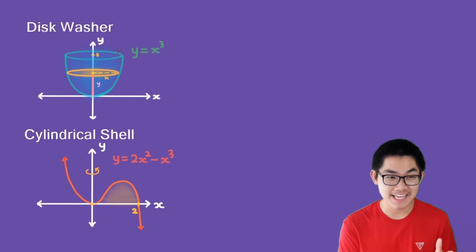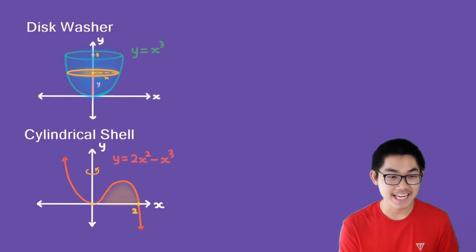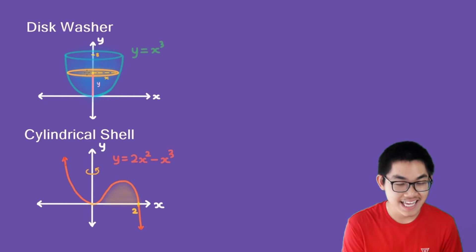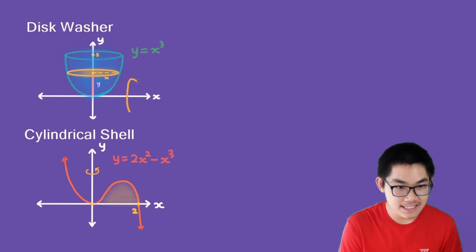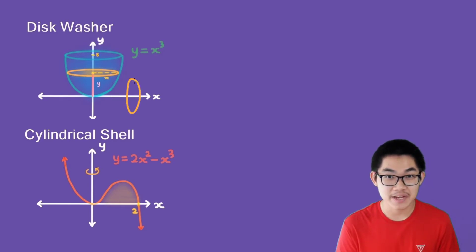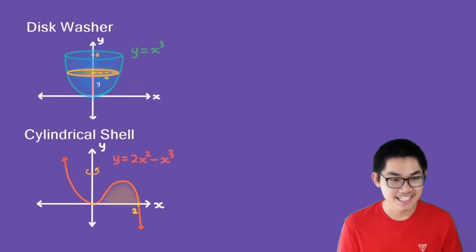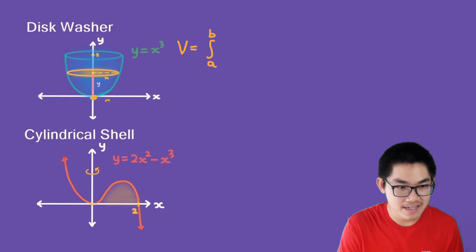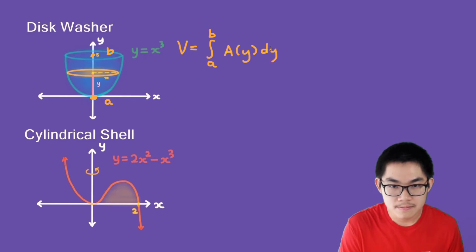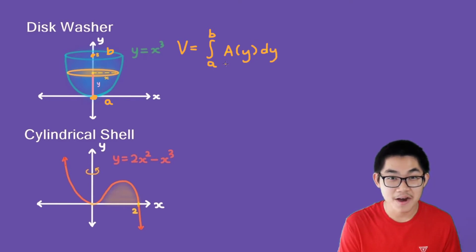If the object looks like half of a cucumber, you have to use the disk/washer method. This method says that if the cross section is on the y-axis, then you integrate with respect to y. If it's on the x-axis, you integrate with respect to x. Since it's on the y-axis, the volume formula is the integral from a to b of A(y) dy, where A(y) is the area of the cross section.